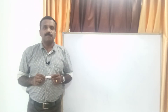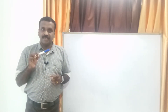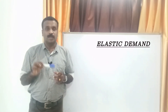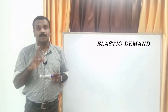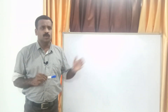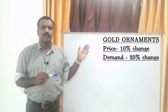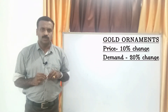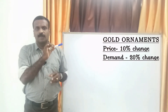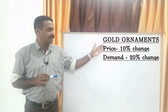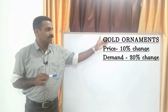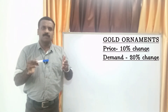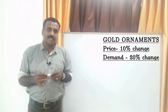The first type of price elasticity of demand is Elastic Demand, also called Relatively Elastic Demand. For example, with gold ornaments, a 10% change in price leads to a 20% change in demand. That is why this is the first type — Elastic Demand.